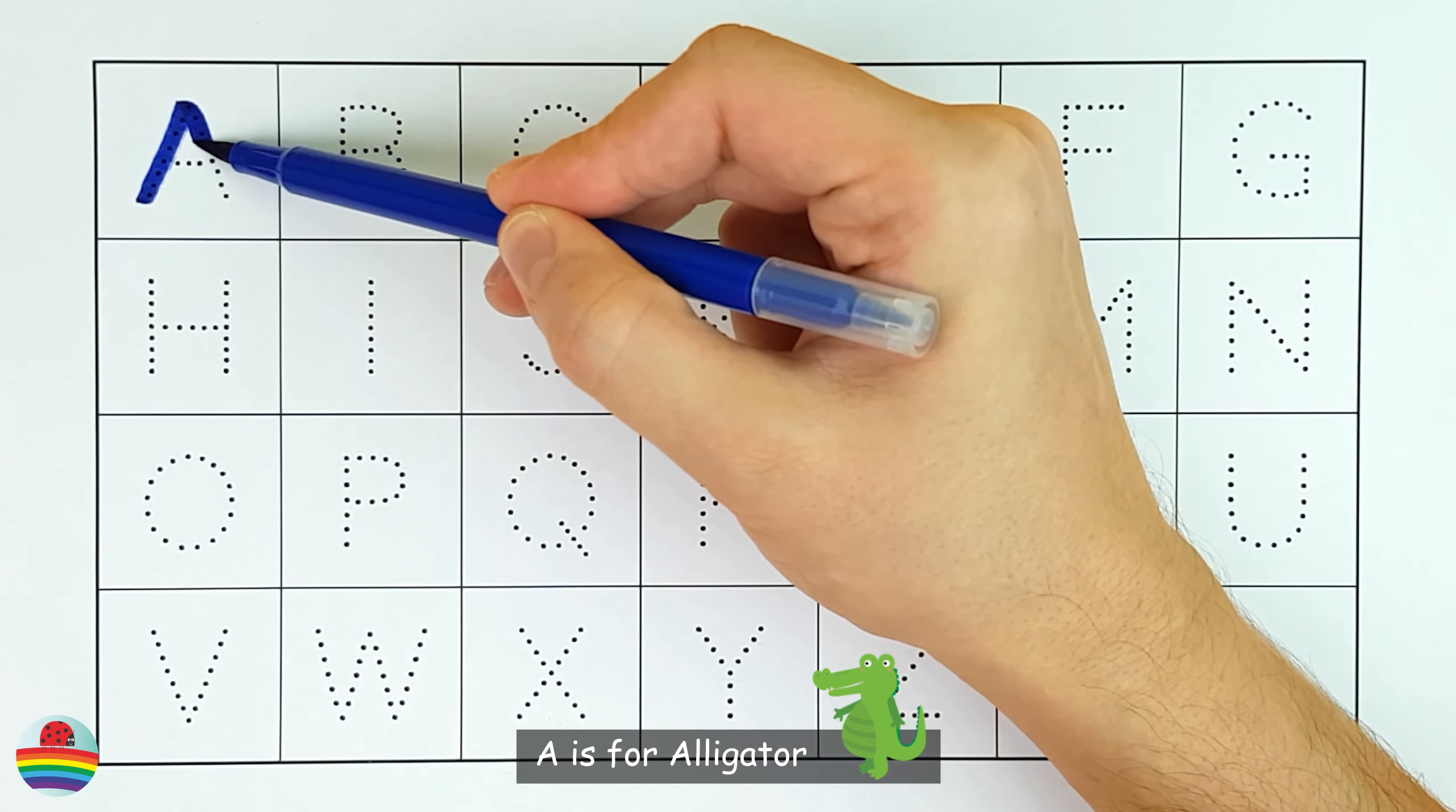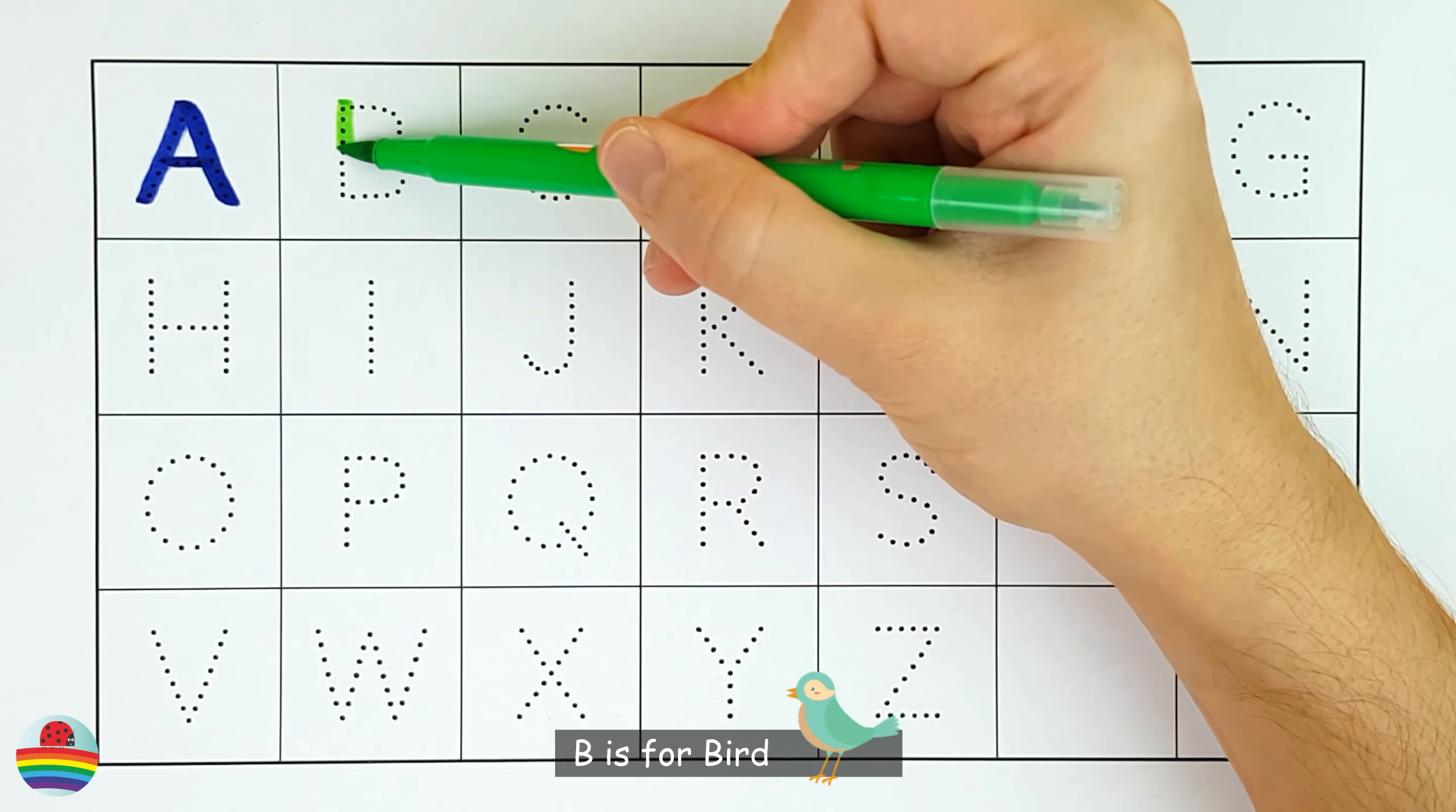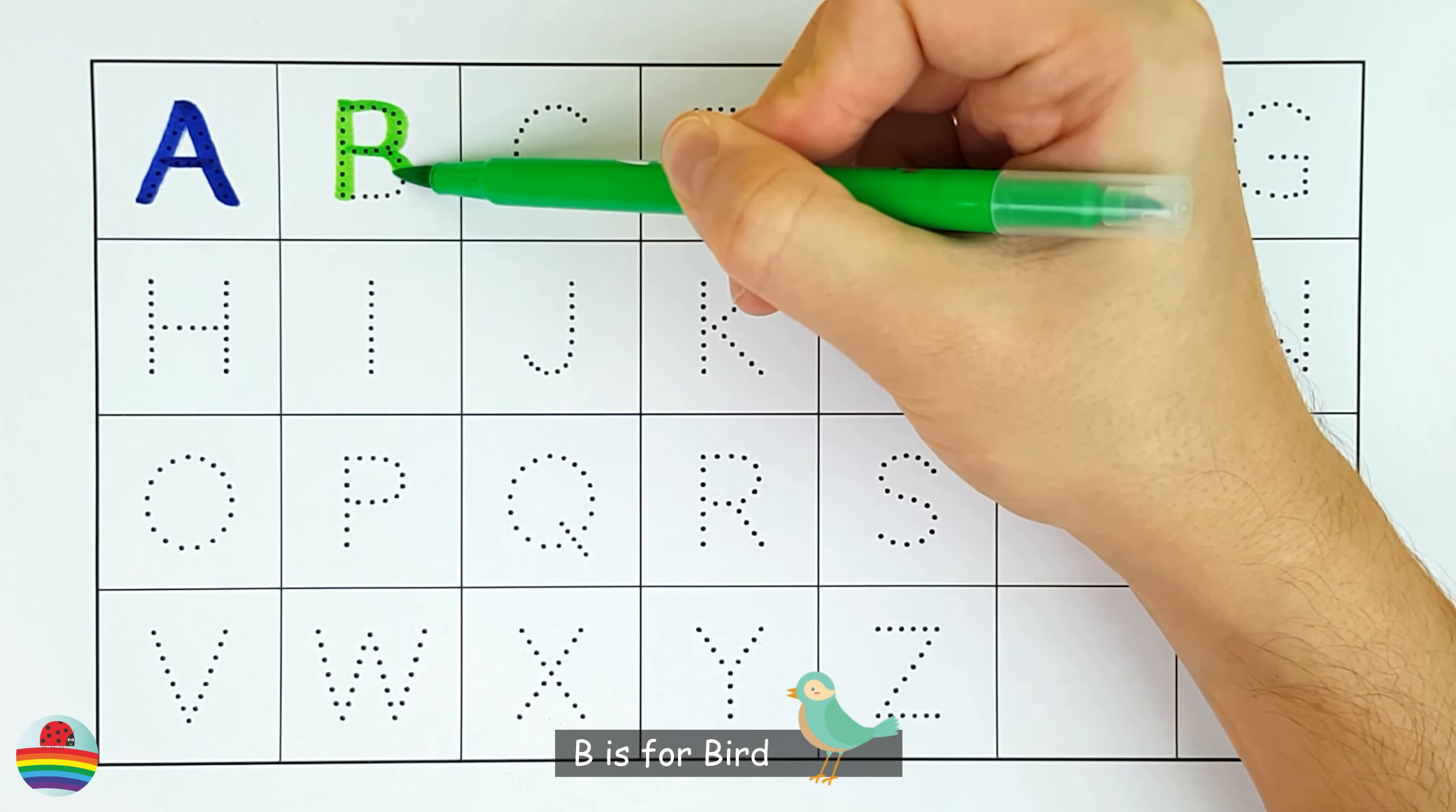A. A is for alligator. A. B. B is for bird. B.